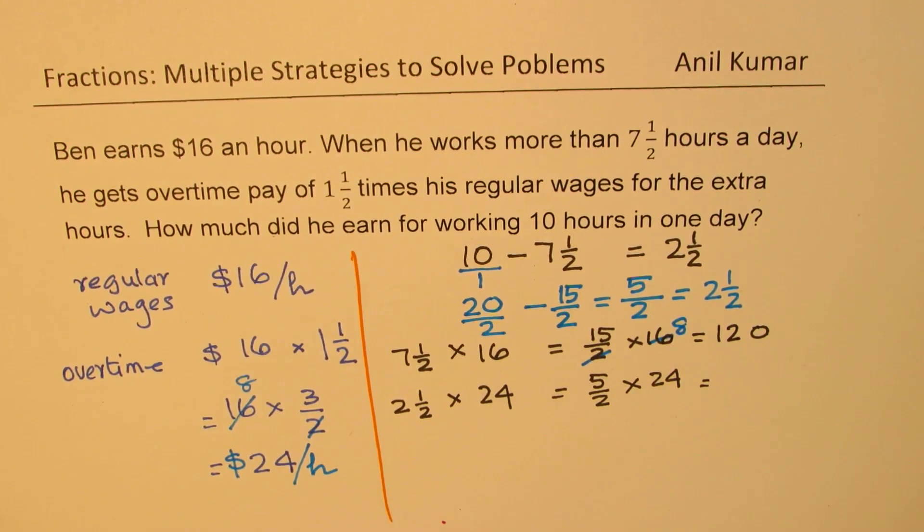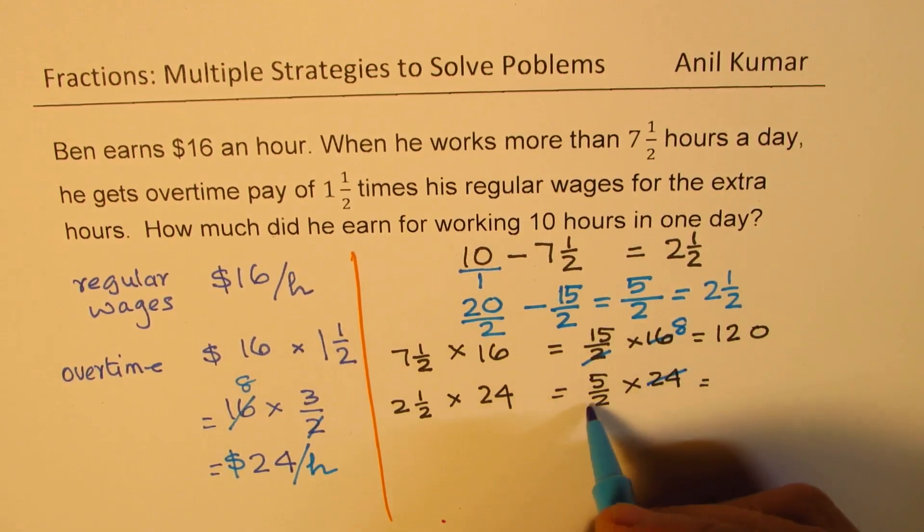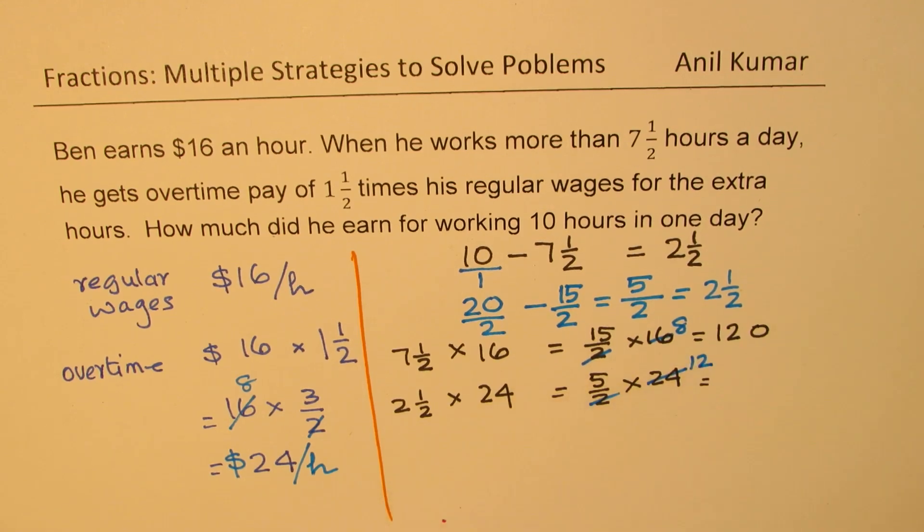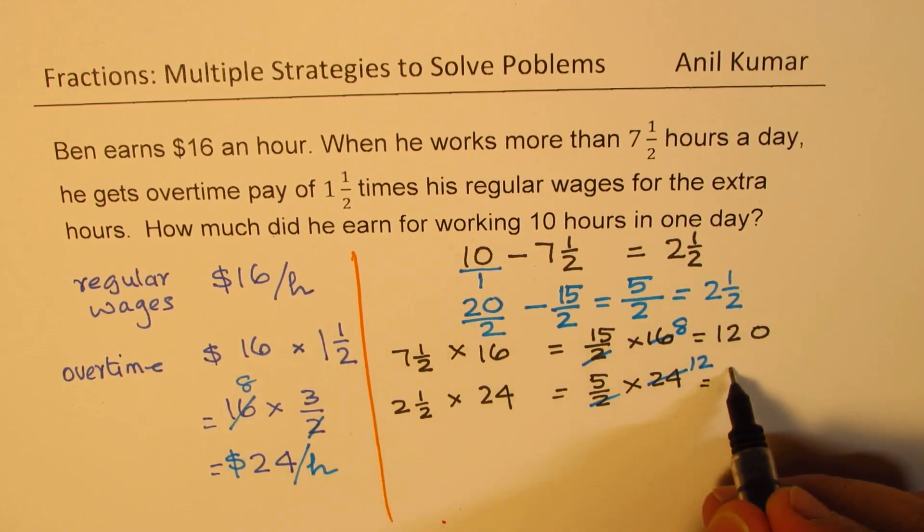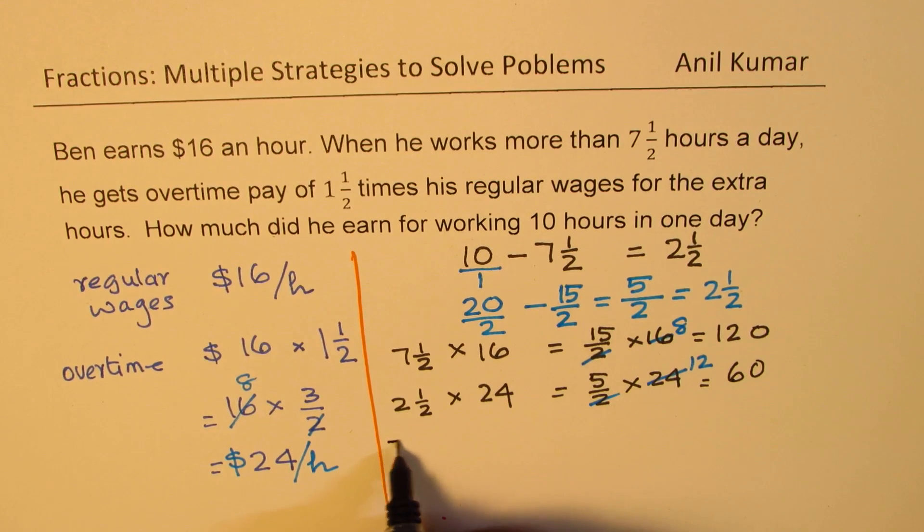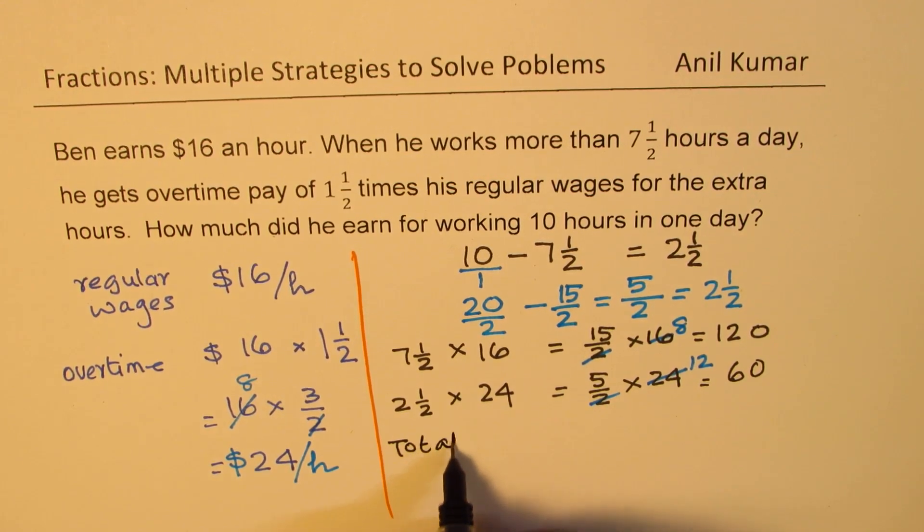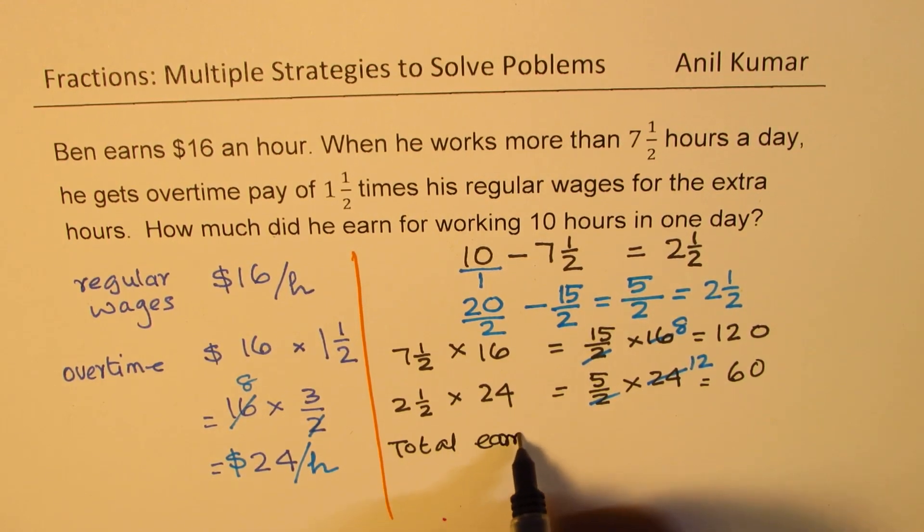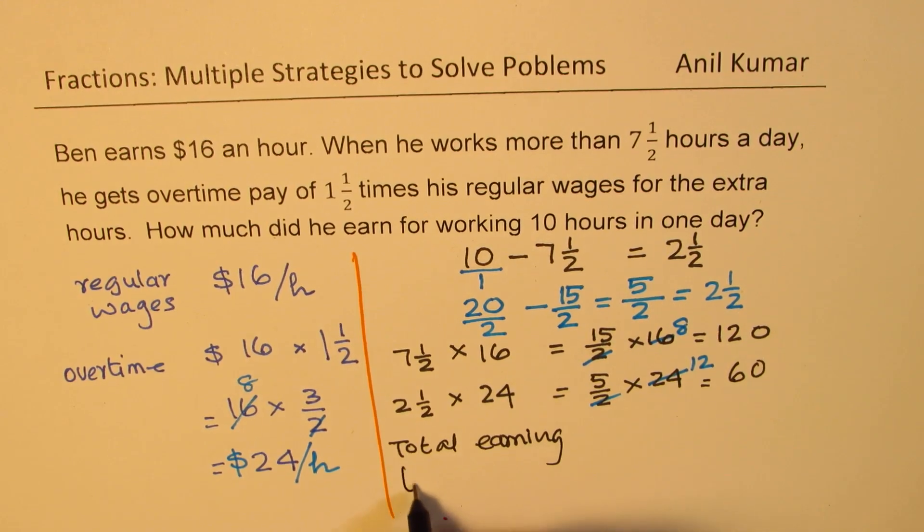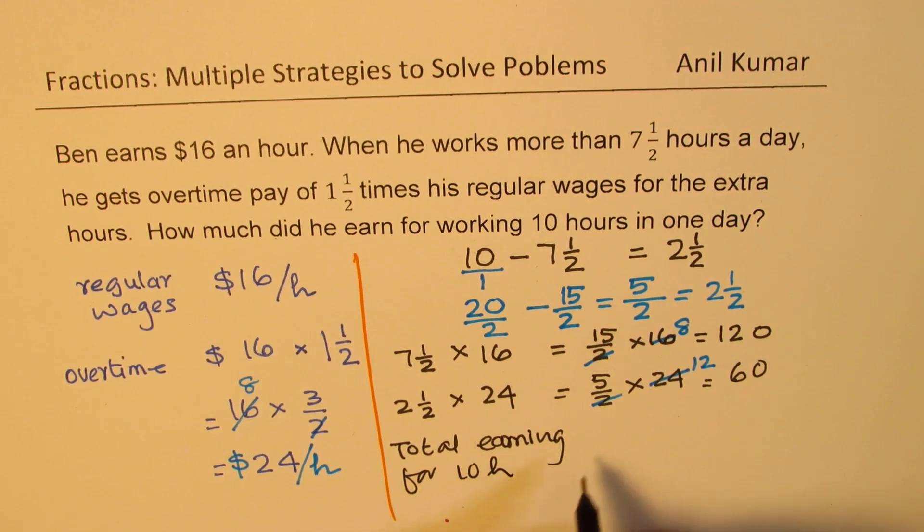And here, again, half of 24 is 12. And 12 times 5 is 60.